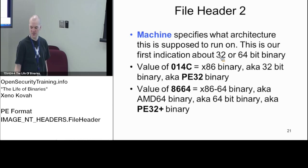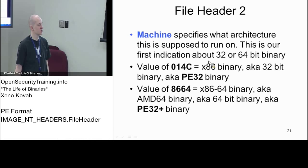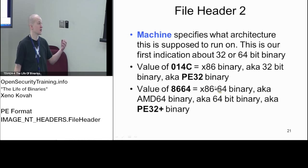So if the machine value is 0x14c, then this is going to be an x86 binary - most likely 32-bit x86. A 32-bit binary we would typically call P32.